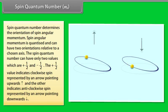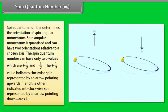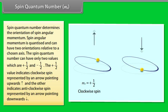Spin Quantum Number MS: The spin quantum number determines the orientation of spin angular momentum. Spin angular momentum is quantized and can have two orientations relative to a chosen axis. This spin quantum number can have only two values: +½ and −½. The +½ value indicates clockwise spin, represented by an arrow pointing upward, and −½ indicates anticlockwise spin, represented by an arrow pointing downward.